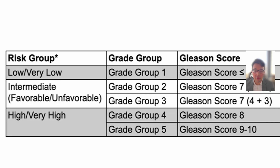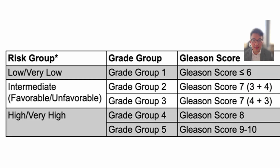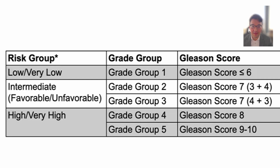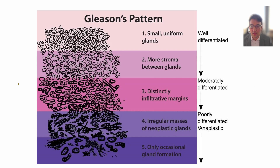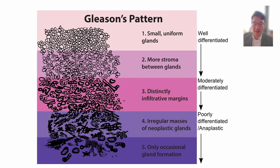Gleason scores can be confusing. The old nomenclature used terms like 3 plus 3 equals 6, 3 plus 4 equals 7, and 4 plus 3 equals 7. Physicians and patients were confused by this, so it has been changed to Gleason grade groups 1 through 5 — but they mean the same thing as scores 6 through 10. From a pathologist's perspective, they're looking at how differentiated the cells are. If the cells look more aggressive and poorly differentiated, it's a higher grade group.